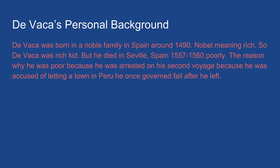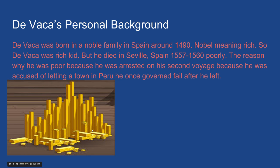He died in Seville, Spain, between 1557 and 1560, poorly — because he was arrested on his second voyage. He was accused of letting a town in what is now modern-day Peru fail after he governed it and then left, so he was blamed for it.